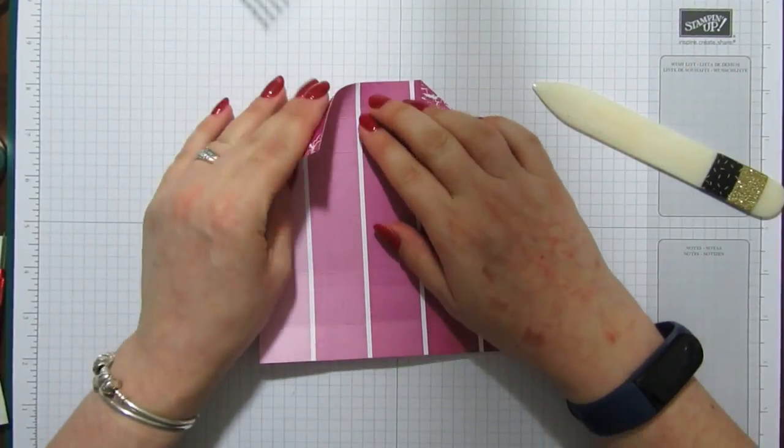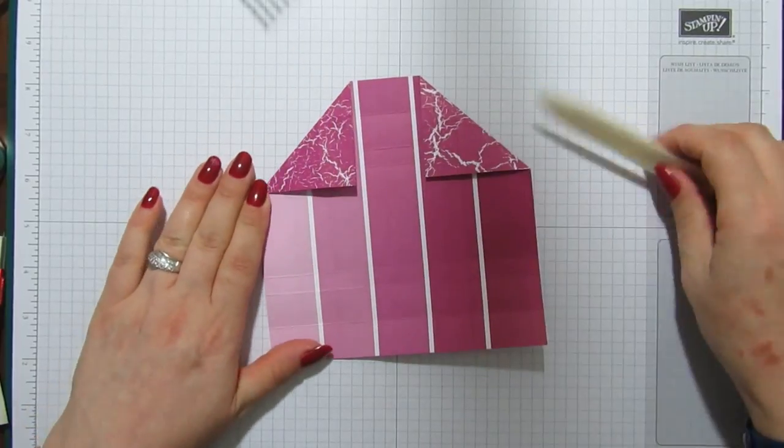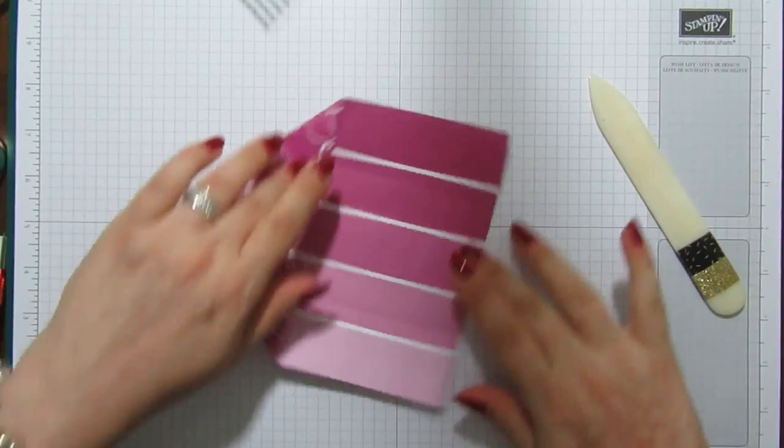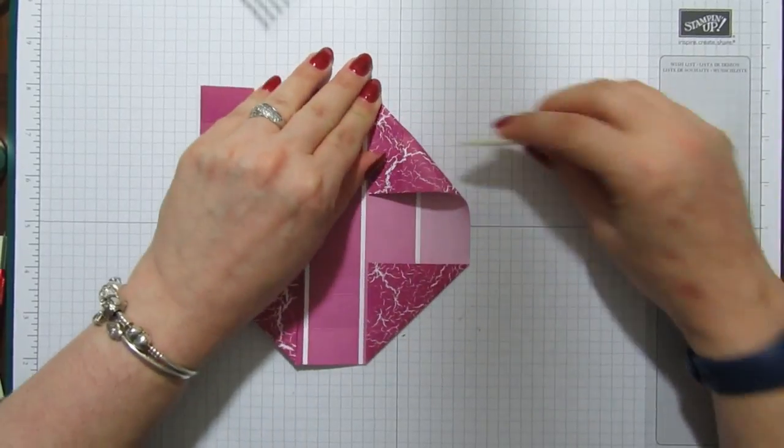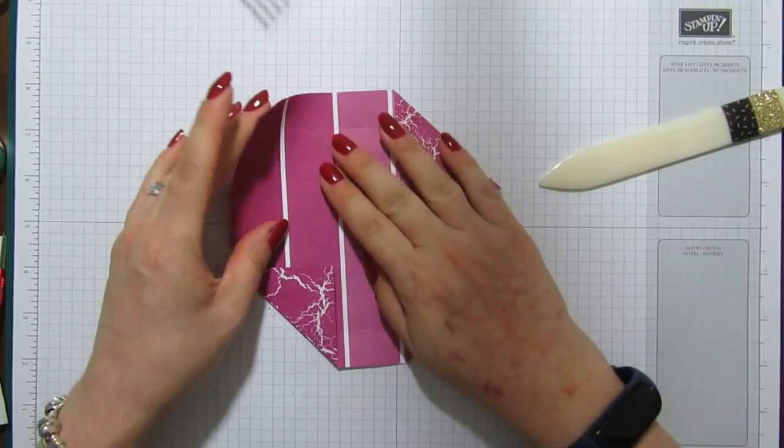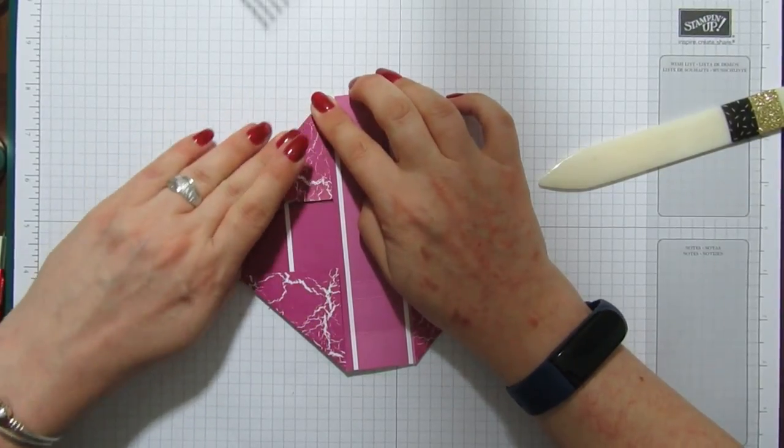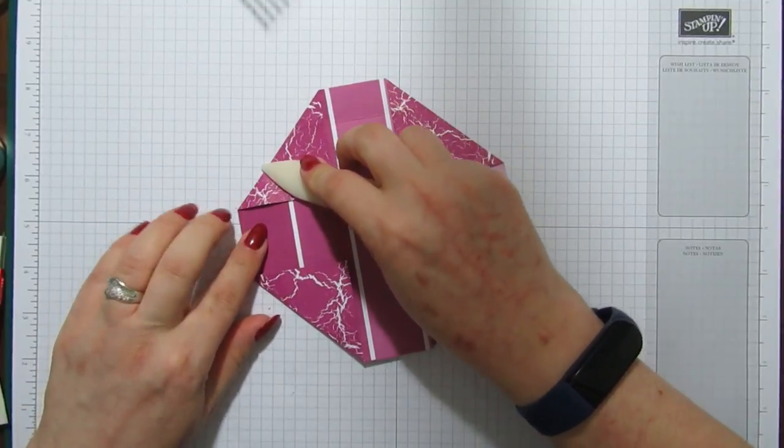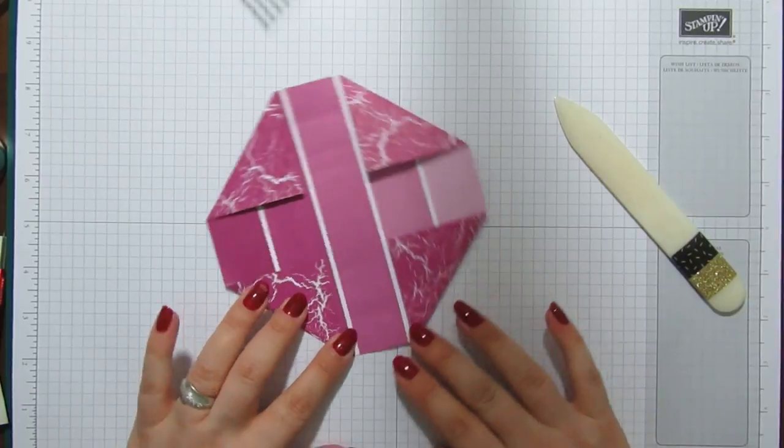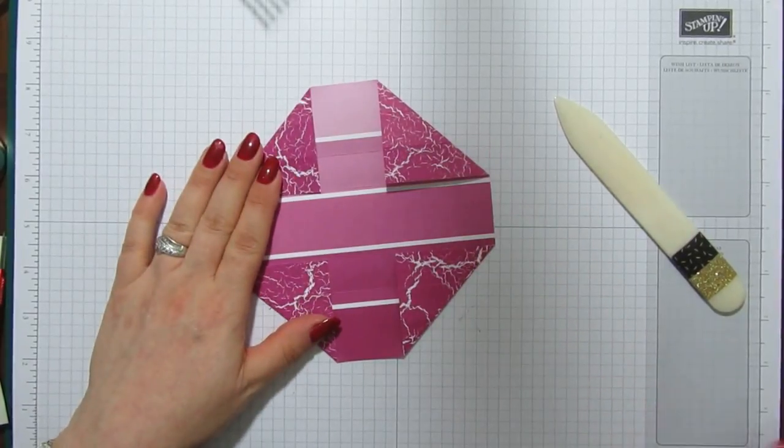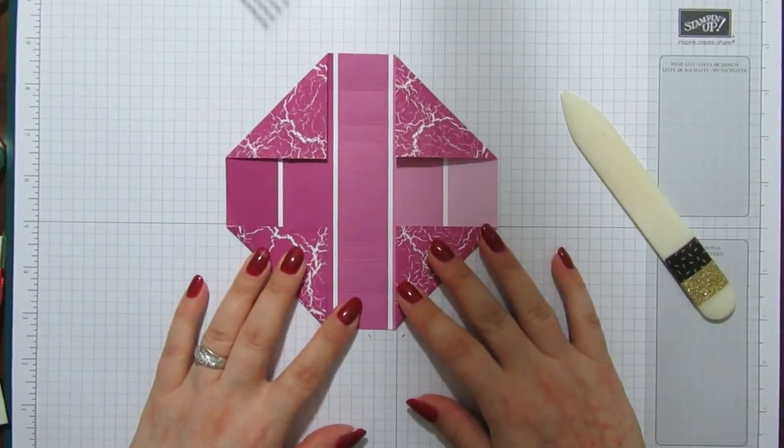Do the same on this one, match it up with this score line. And then repeat the same on the other end, like so. So you will end up with that.